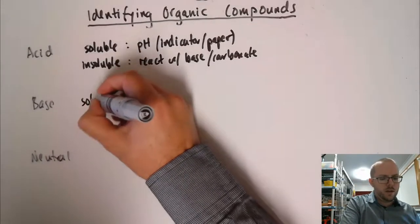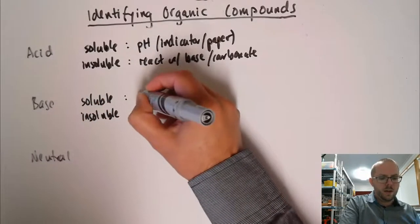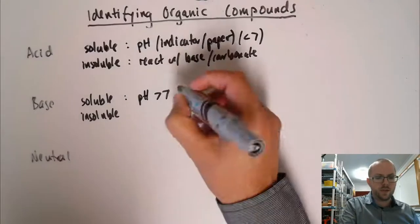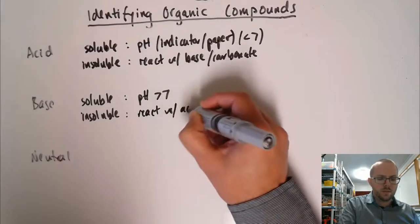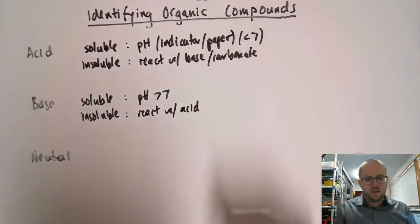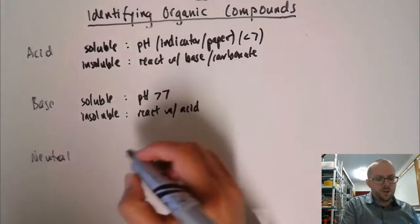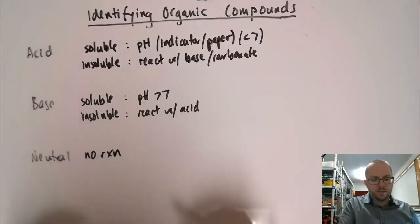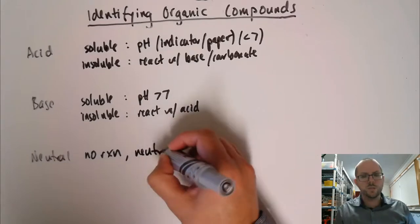For bases, pH greater than seven. Again, using an indicator or paper, will this react with acid to either dissolve or to form bubbles if the base is a carbonate. And then for neutral, we get no reaction. You won't get a reaction with either of these and we will also be able to, if it was soluble, we could measure a neutral pH.